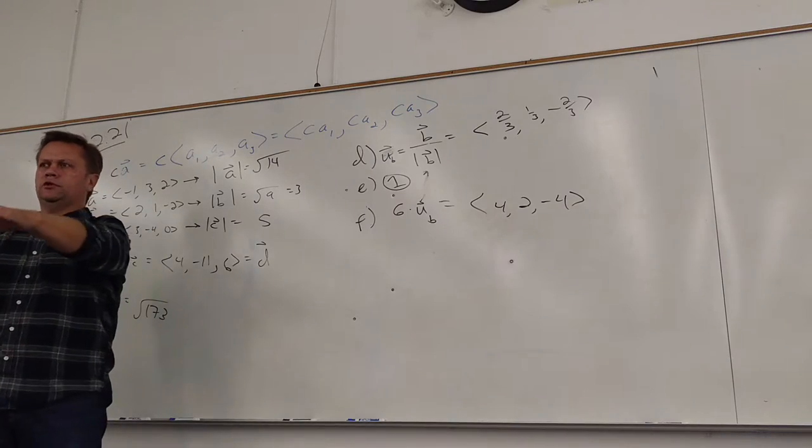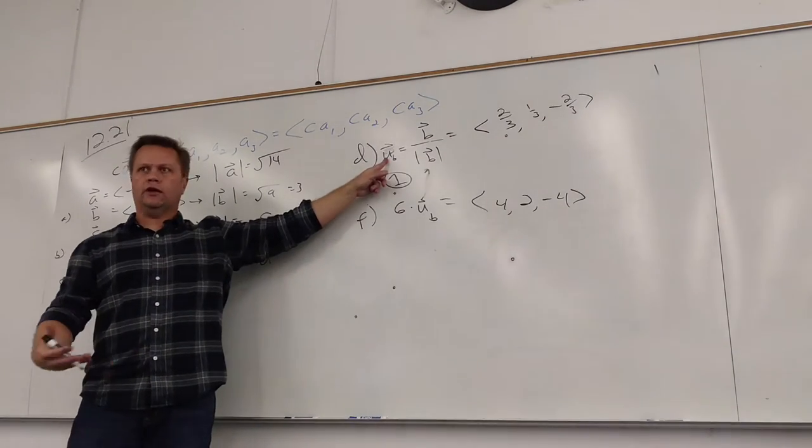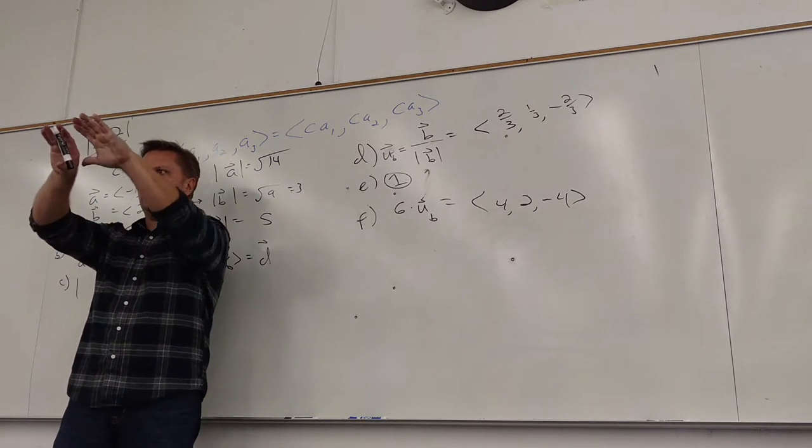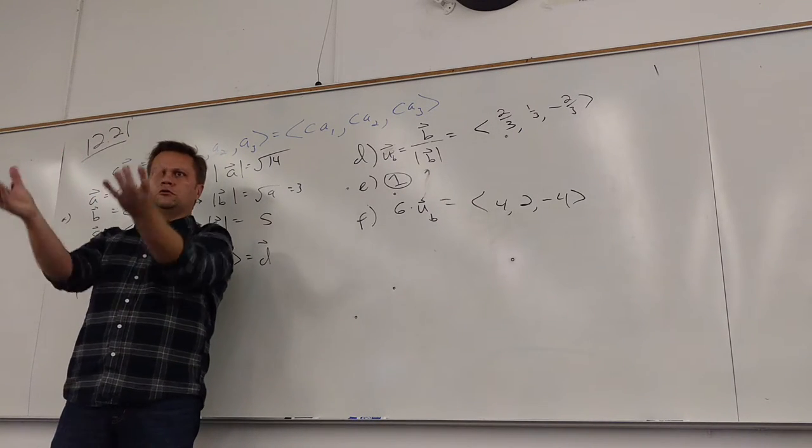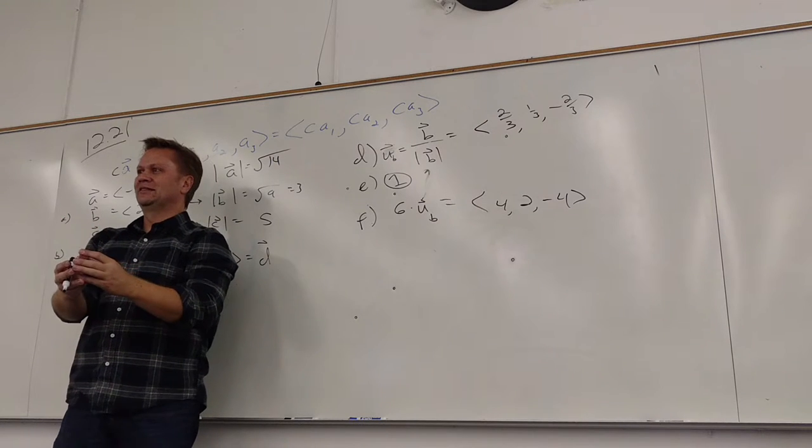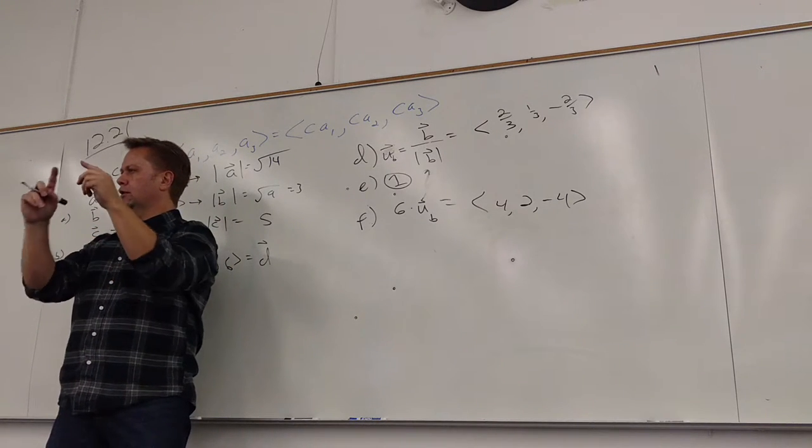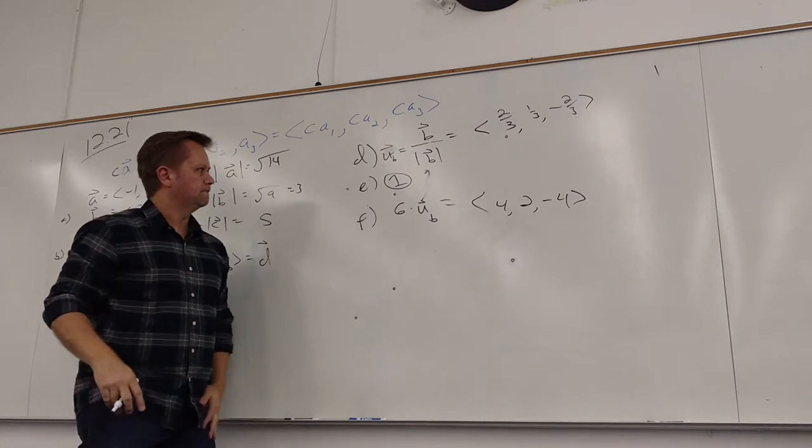And then the very last thing was talking about the idea of a unit vector. And if I took all the unit vectors, if I had them plus the start of the origin, that would just make the unit sphere. Right? The analog to the unit circle that we all love and hold dear. Cool.